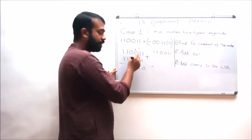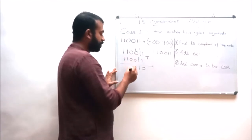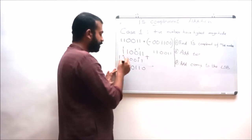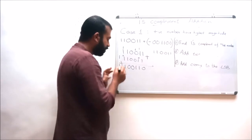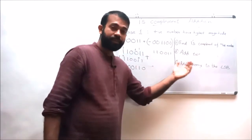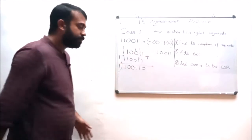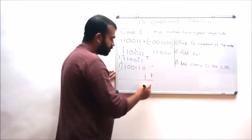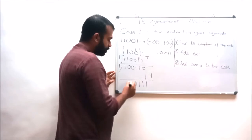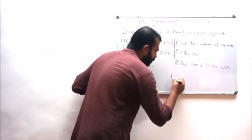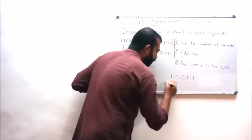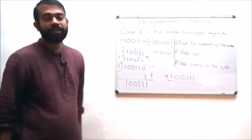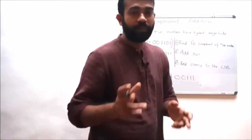Continuing: 1 plus 0 results in 1; 1 plus 0 results in 1; 0 plus 0 is 0; 1 plus 1 is 0 with a carry of 1; 1 plus 1 is 0 with a carry of 1; 0 plus 1 is 1, and this 1 is carried over. Since we get a round-around carry, this carry is added with the LSB position. The final answer is 1 plus 0 is 1, giving 100111, which is positive because the positive number has the greatest magnitude. So the final result is plus 100111.